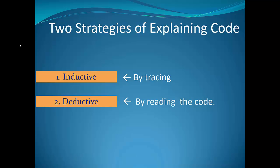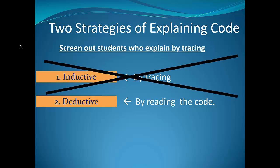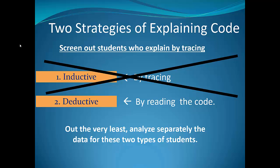Those are the two approaches students can use. The point I'm going to make is in an eye tracking study, I don't think you really want to study the inductive students. My first suggestion is that you screen out those students. If you want to keep those students in your data, at the very least separate these two types of student behaviors into two separate sets of data and analyze them separately.